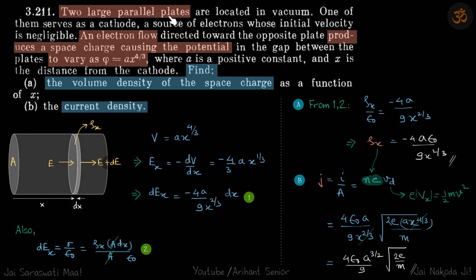We have two large parallel plates and an electron is flowing from one plate to another. This flow of electron produces a space charge causing the potential in the gap to vary as v is equal to ax power 4 by 3. So the electron is flowing from one end to other and that's causing a potential which is varying as a distance x by this function. We need to find the volume density of space charge and current density.